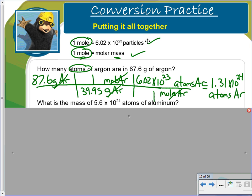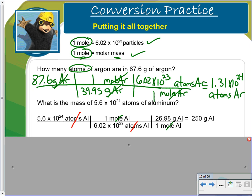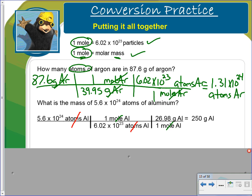What is the mass of 5.6 times 10 to the 24 atoms of aluminum? You should pause the video and work this. And so you'll see here. Broke down the given. And we wanted to cross it out. We can go from atoms to moles. That's this idea here. And then we can go from moles to mass. Because we know that 1 mole is equal to the molar mass.